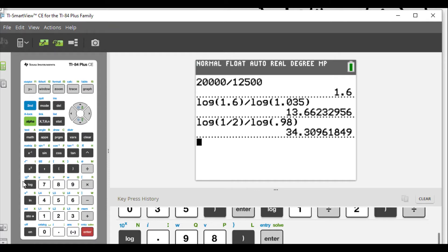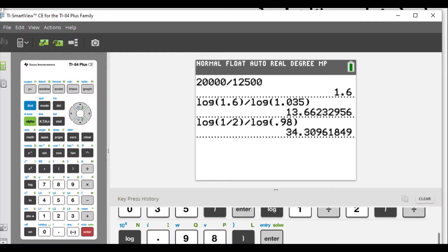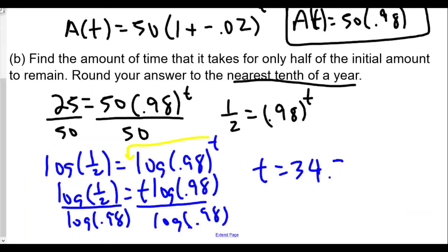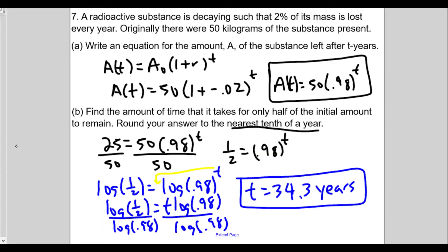And we get 34.3096. We're rounding to the nearest tenth, so t is going to be 34.3 years. That's how long it's going to take if we're degrading by 2% every year. It'll take about 34.3 years for half the substance to be left over.